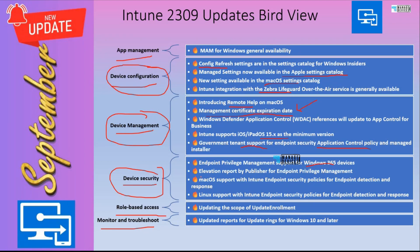Elevation Report by Publisher is a new report introduced to Intune with 2309. macOS support for Intune endpoint security policies — specifically Endpoint Detection and Response — is really good. Linux support for that same EDR capability is also coming in this version.